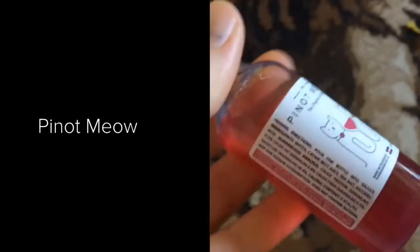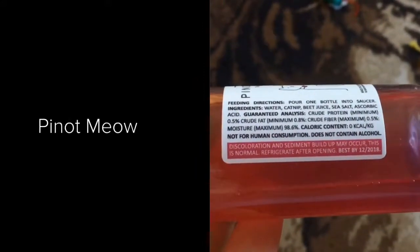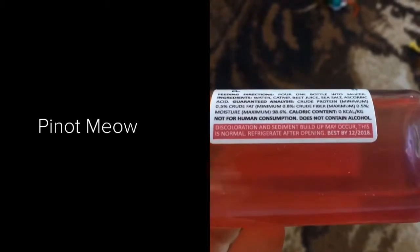Okay, so this is the Pinot Meow. I'm pretty sure that's the way it's pronounced. The ingredients include water, catnip, beet juice, sea salt, and ascorbic acid.